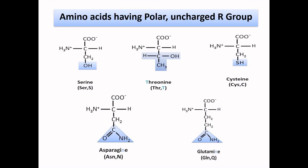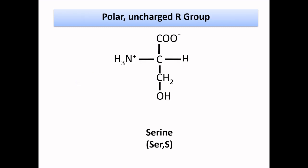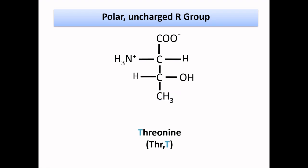Now let's move to our third group — amino acids with polar uncharged R group. It contains five amino acids: serine, threonine, cysteine, asparagine, and glutamine. Serine, threonine, and cysteine have single-letter names similar to their name's first letter, but asparagine and glutamine single-letter names are not similar to their name's first letter. Serine is similar to alanine but it has a hydroxyl group attached to the methyl group.